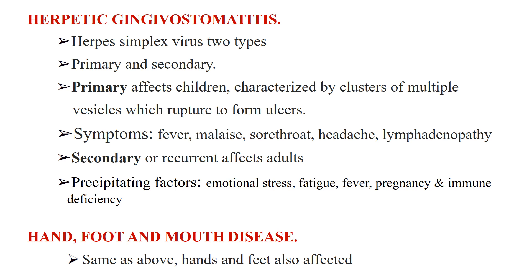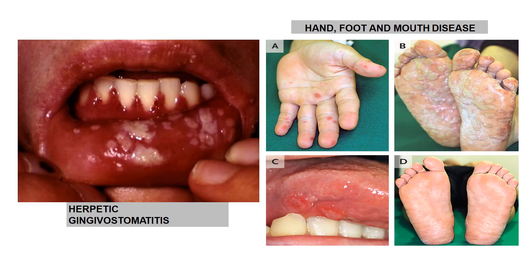Hand, foot, and mouth disease is also a viral infection affecting children. Oral lesions are seen on the palate, tongue, and buccal mucosa, appearing similar to herpetic gingivostomatitis. Vesicles however also develop on the skin of the hands, feet, and sometimes buttocks. This picture shows herpetic gingivostomatitis in the lower lip, and these different pictures show hand, foot, and mouth disease.